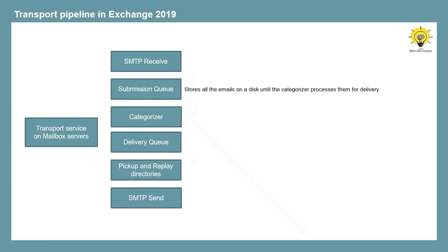Once the email passes SMTP Receive and is not rejected by any anti-spam or anti-malware agents, SMTP Receive places that email in the submission queue. Submission is the process of putting emails into the submission queue. The submission queue stores all emails on disk until the Categorizer processes them for delivery. While the Categorizer processes an email, a copy remains in the submission queue, and after the email is successfully processed, the Transport Service removes it from the Categorizer and from the submission queue.